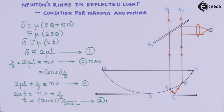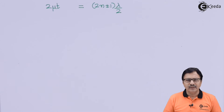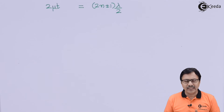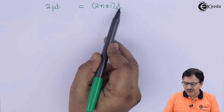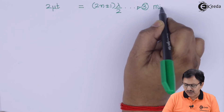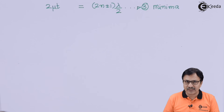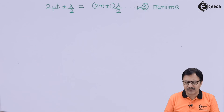Now let us find the condition for the minima — that is, for the dark ring and destructive interference. We know that the optical path difference delta is 2μt = (2n ± 1)λ/2 for minima. But we have not yet added the term ±λ/2 from Stokes' theorem. So the correct expression is: 2μt ± λ/2 = (2n ± 1)λ/2.